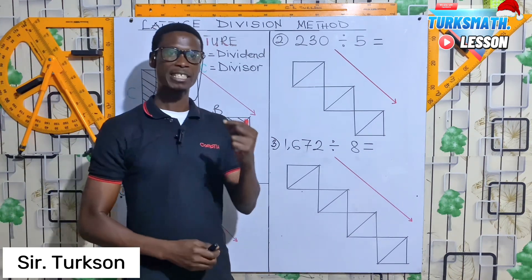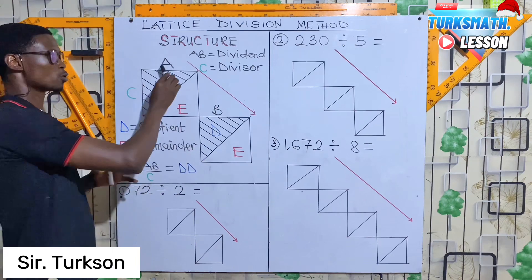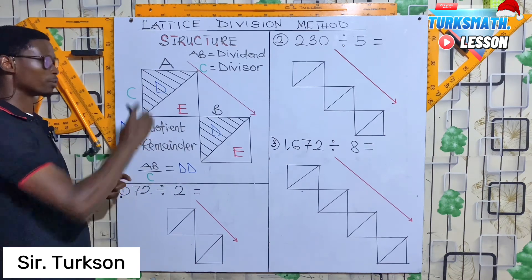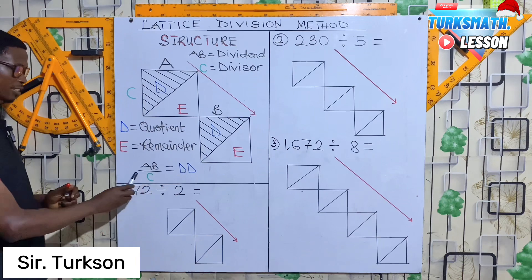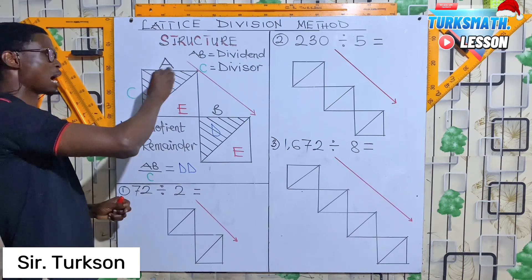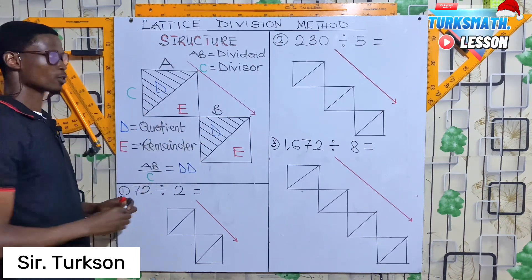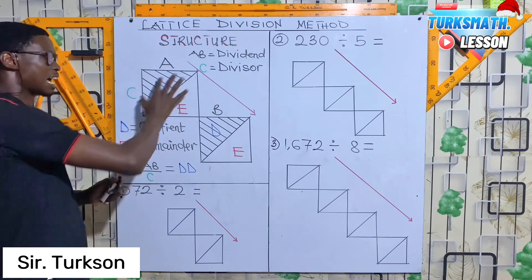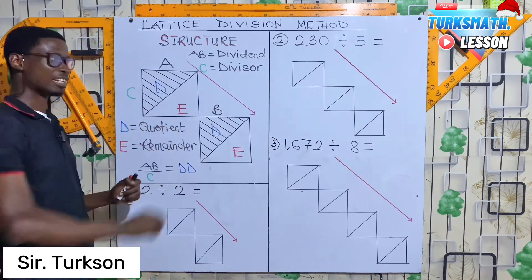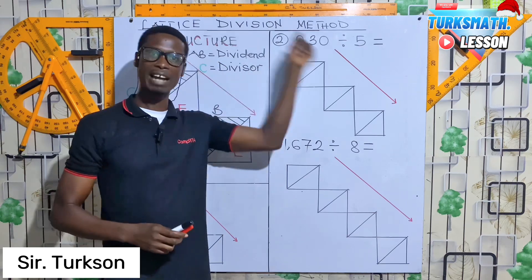For example, if you are given 25 divided by 5, you break the 25 into its digits — 2 and 5 — and write 2 in the first box and 5 in the second. Your divisor goes on the left side of the lattice. A and B divided by C equals D. You get your D from the upper part of the box. After dividing, you read the quotient from the upper part, top to down, following the red arrow. Division starts from left to right.